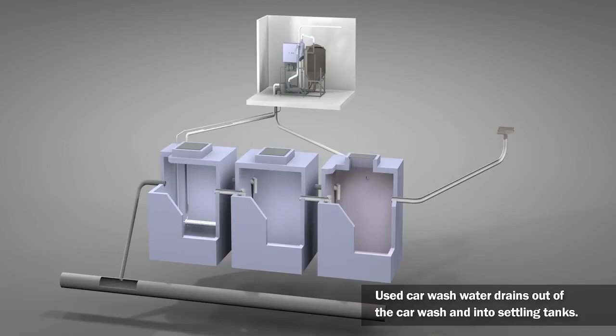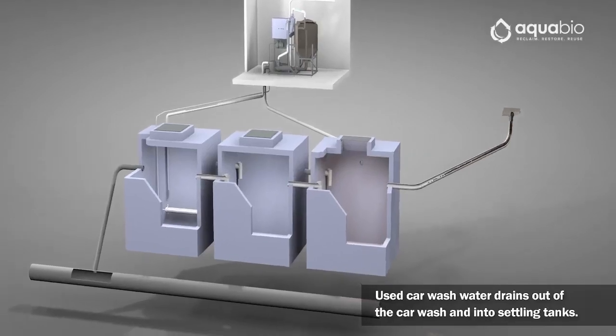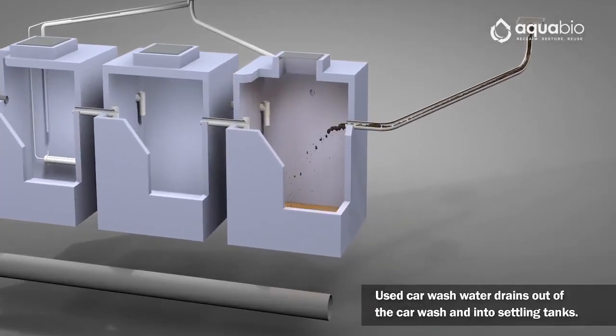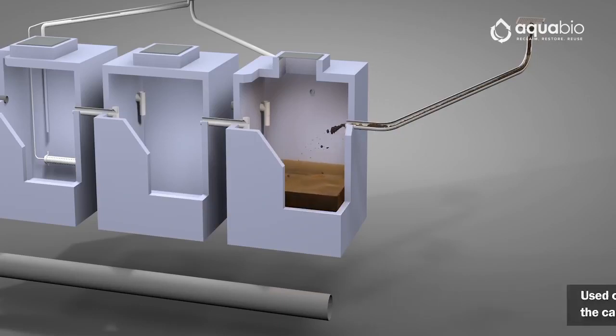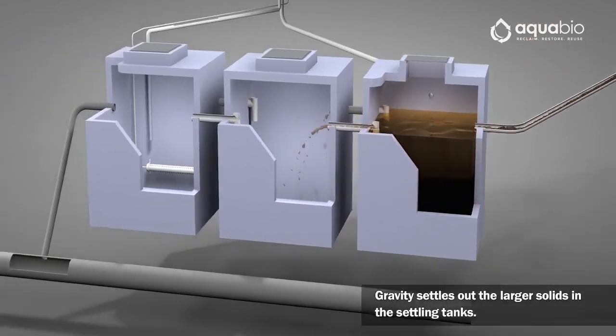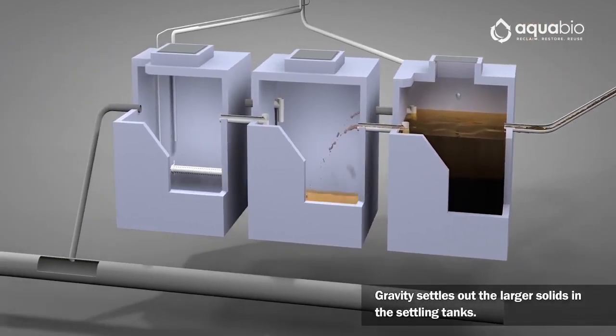Used car wash water drains out of the car wash and into settling tanks. Gravity settles out the larger solids in the settling tanks.